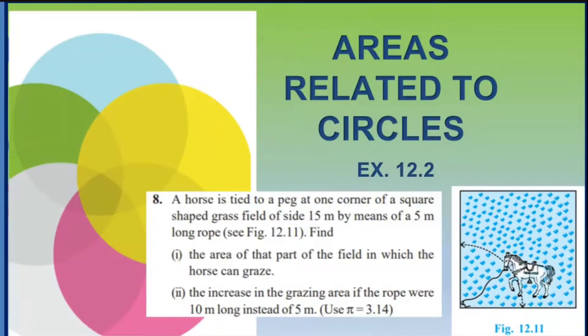Question number 8 states that a horse is tied to a peg at one corner of a square shaped grass field of side 15 meters by means of a 5 meter long rope. Find first the area of the part of the field in which the horse can graze, and second the increase in the grazing area if the rope were 10 meters long instead of 5 meters. Use π = 3.14.